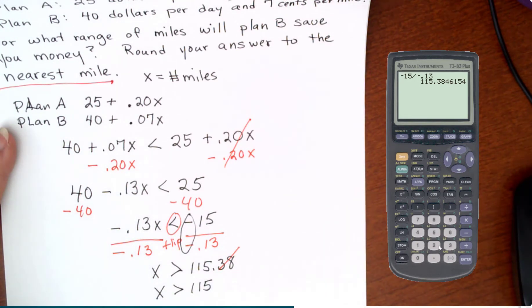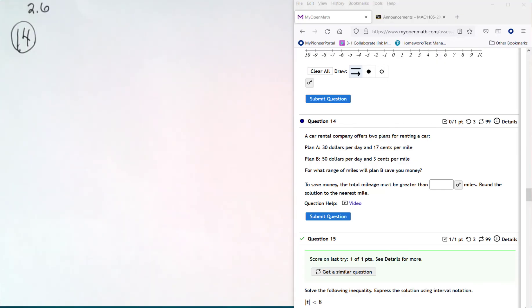So if they only drove 40 miles, plan A is better. Let's look at one more version of this problem. And I didn't write it down for you on the screen. But we can just pull it over.